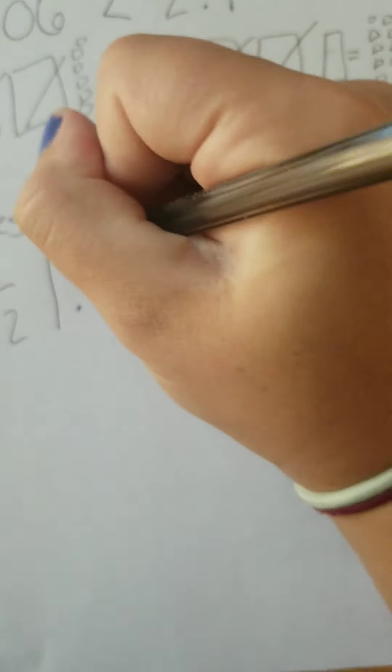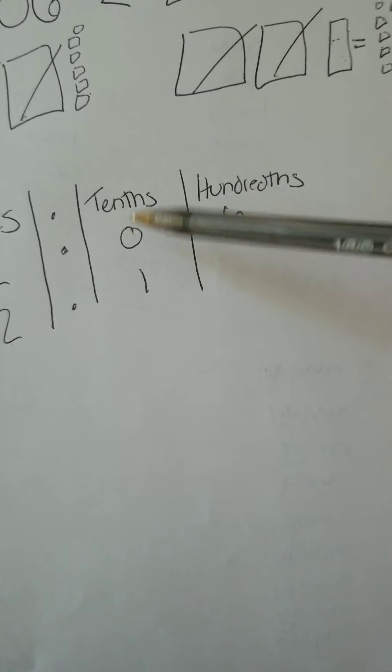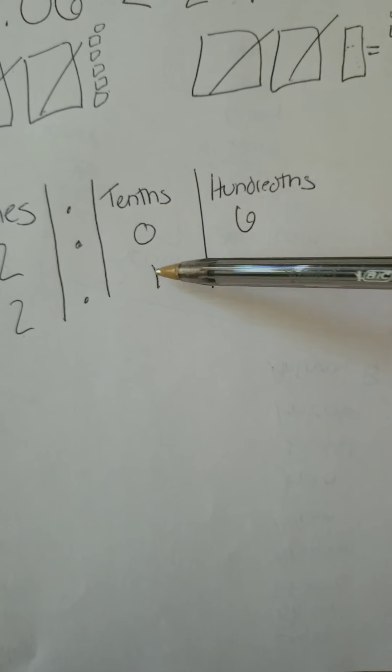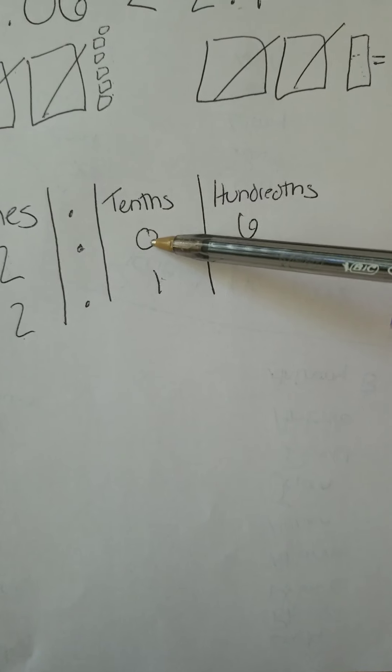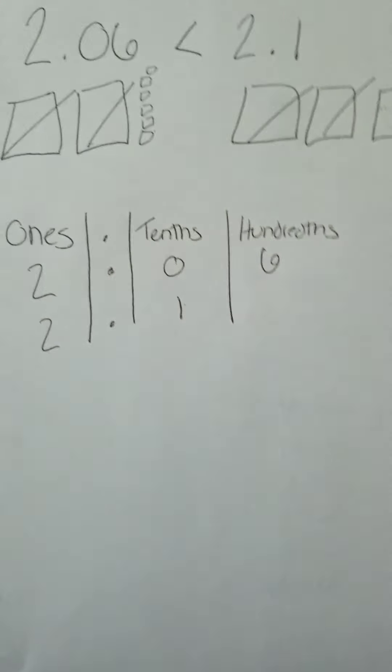And then I go from the left to the right. Okay, these are the same. Obviously, my decimal is the same, it's a decimal. Oh, this right here, the one in the tenths place is bigger than the zero in the tenths place. So therefore, this decimal would be the largest.